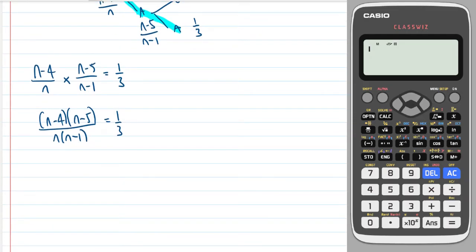And then we could do some cross multiplying. So I could bring this denominator, multiply both sides by that denominator to bring it to the top over here. And I could take this denominator here, multiply it by both sides to bring it over here. So we get three lots of n minus four, n minus five is equal to one lot of n, n minus one.